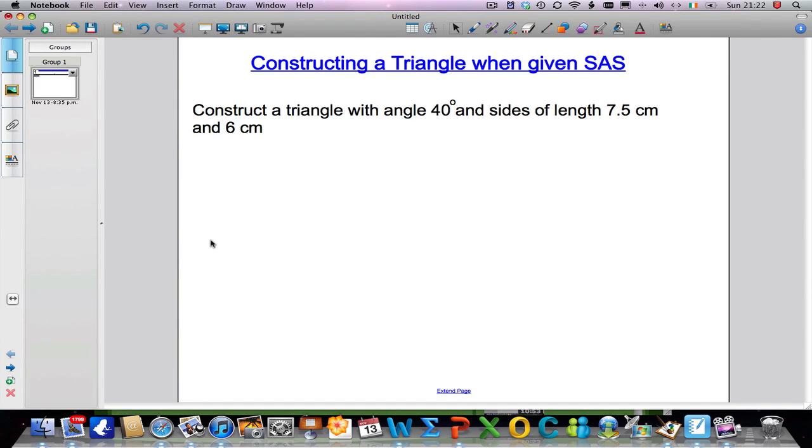Hello again and welcome to another video from me, Mr. Arnold. In this video we're going to be focusing on constructing triangles when given two sides and one angle, or SAS - side, an angle, and another side. In this question we're asked to construct a triangle with an angle of 40 degrees and sides of length 7.5 centimeters and 6 centimeters.